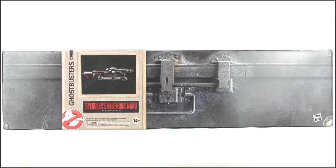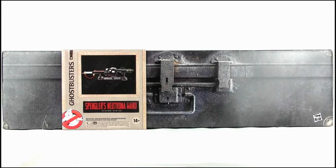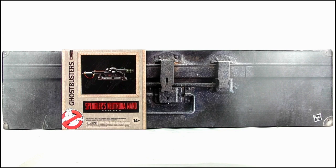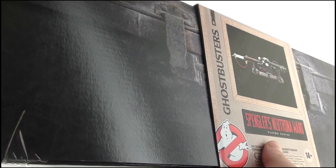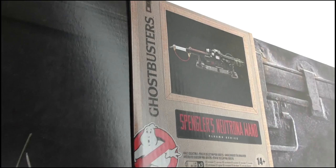Starting off with the packaging, even the box has had careful thought put into it, resembling an old military long box on which the thrower is found in the film. A small separate sleeve contains all the details of the toy, ensuring that the look of the box remains unspoiled as it's easily removable.